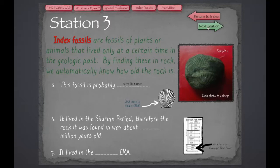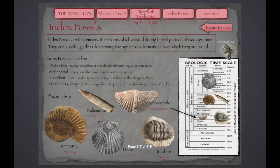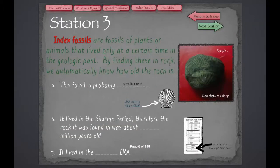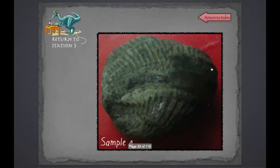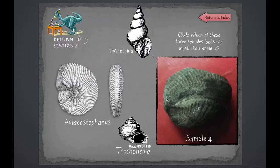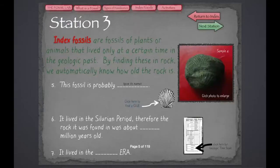Station 3 refers to index fossils. Here we have information on index fossils for students to look at for background information. We can click the image to enlarge it for detail. We may need some clues, and we can return to Station 3 to continue answering the questions.